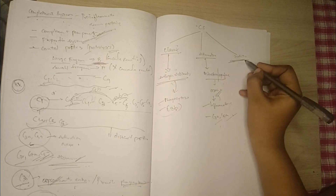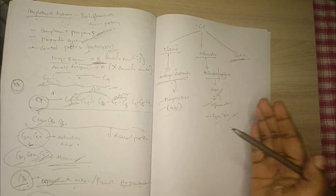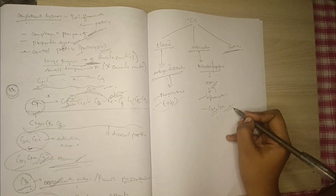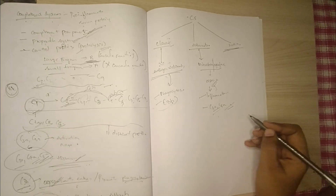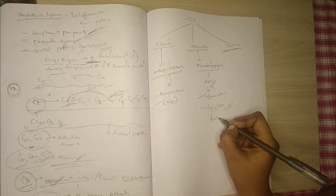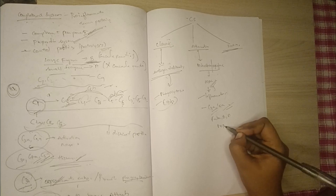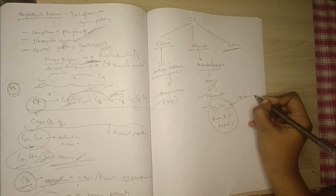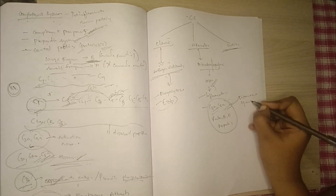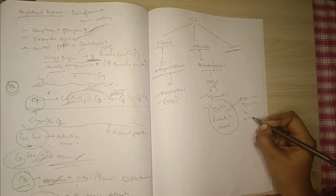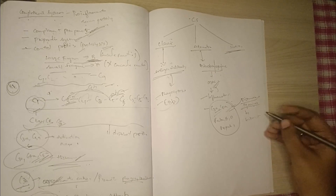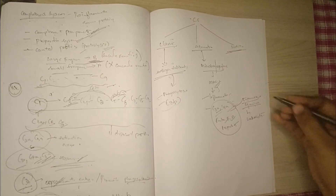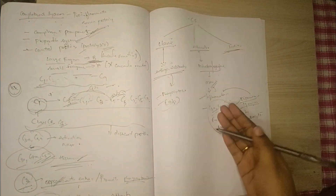Before the lectin pathway, we need to understand the properdin system. In the properdin system, factors — Factor B, Factor D, and properdin — work alongside C3a and C5a complements to help leukocytes destroy microbes, ultimately leading to inflammation at the end of the pathway.